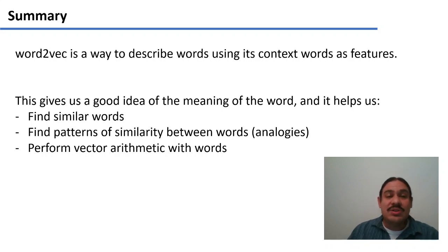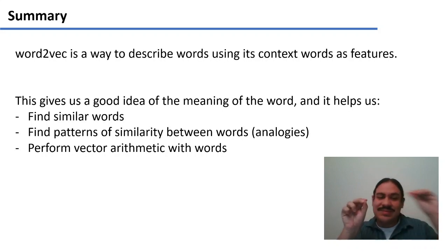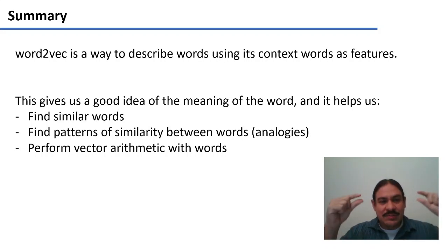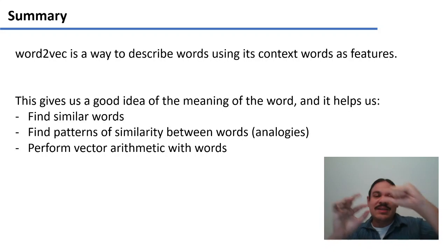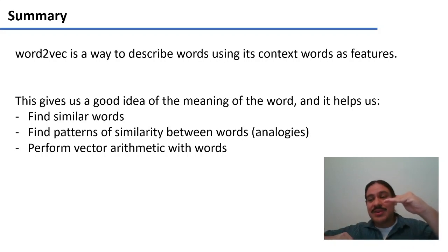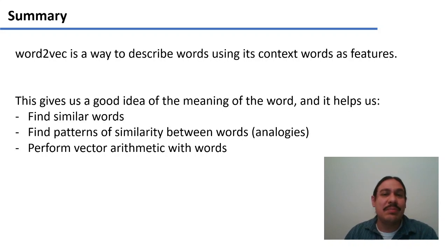In summary, a word2vec is a way to describe words using the context words as features, and they will give us an idea of the meanings of the words. But when we build this feature system, we can also do many more things. We can find similar words because they have very similar word2vec vectors. We can find patterns of similarity — if we have two vectors like Paris and France and two vectors like London and England, the similarity between these pairs is going to be roughly the same. And we can also perform vector arithmetic, so we can take a word, remove some of its meaning characteristics, and then add different meaning characteristics. In our next video, we're going to look at some problems in using word2vec — spoiler alert, many biases can creep into the word2vec and create strange correlations in our features.